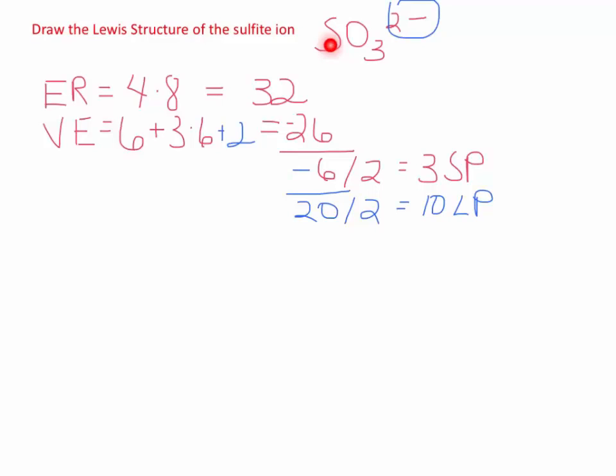Sulfur is the first atom, so this one gets to be in the center. And I will put oxygens all around. Everybody gets one bond. And just to remind you, each bond, each line represents two electrons.